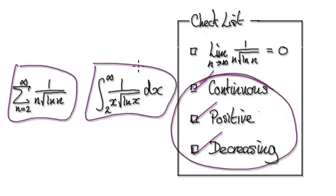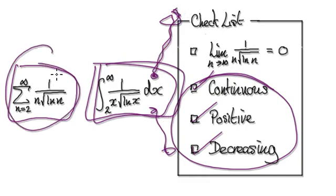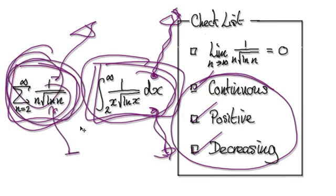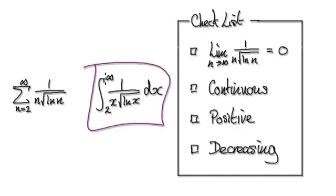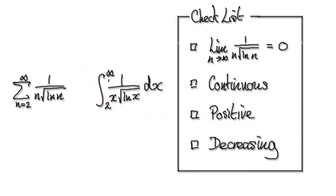Because we've checked all three conditions, we can now apply the theorem. It boils down to checking whether this integral here will diverge or converge. If it diverges, then the series will automatically diverge. If this integral converges, then the series itself will converge. So let's integrate it from two to infinity.